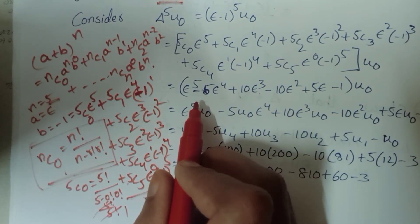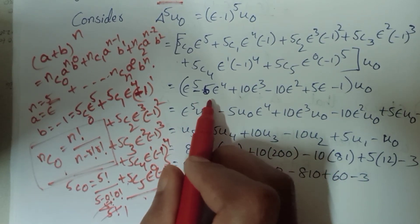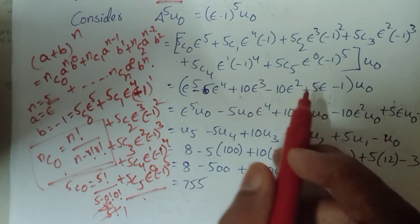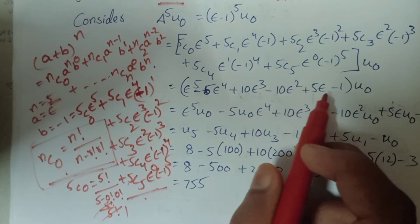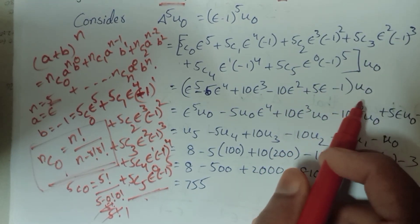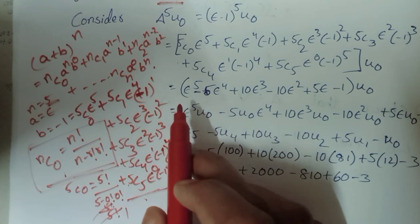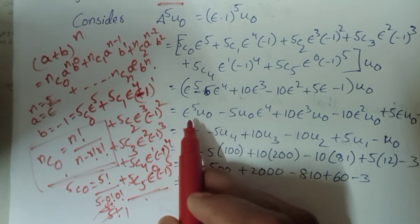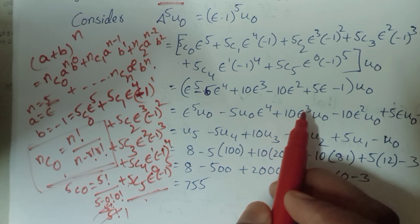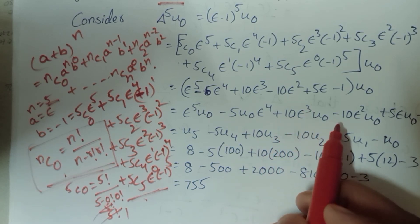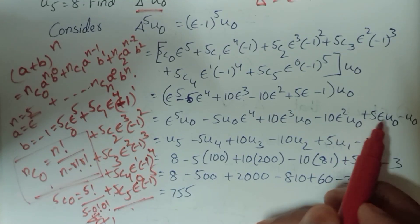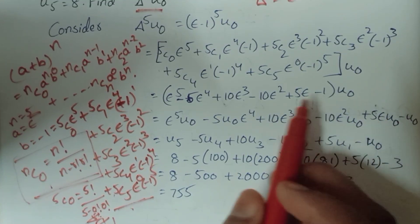This gives: e power 5 minus 5e power 4 plus 10e power 3 minus 10e power 2 plus 5e minus 1, all into u0. Distributing u0: u0 times e power 5 minus 5·u0·e power 4 plus 10·e power 3·u0 minus 10·e squared·u0 plus 5·u0·e minus u0.